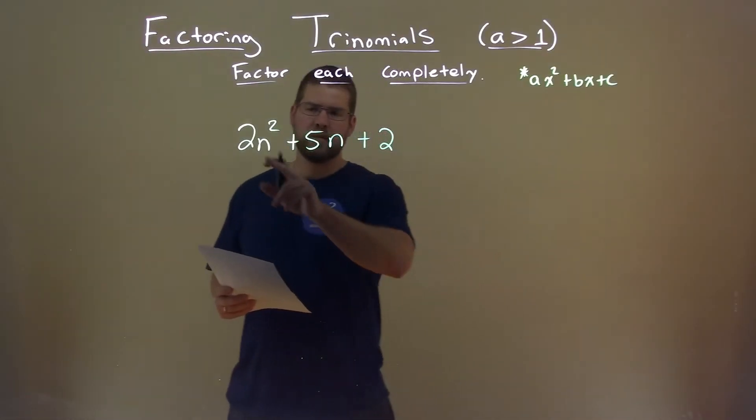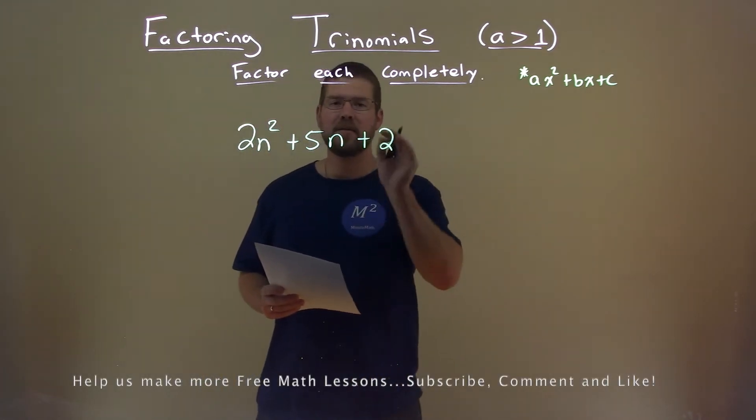We're given this problem: 2n squared plus 5n plus 2, and we need to factor this completely.